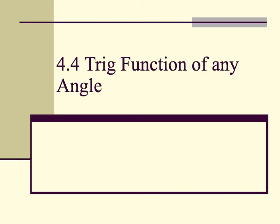In section 4.4, we're going to take the ideas of sine, cosine, and tangent and the ratios they represent, and apply them to any angle. This could be an angle on a unit circle, or an angle on any circle where the radius is not one. Sine, cosine, and tangent are still applied in the same way with the same ratios. Let's take a look at how that happens.